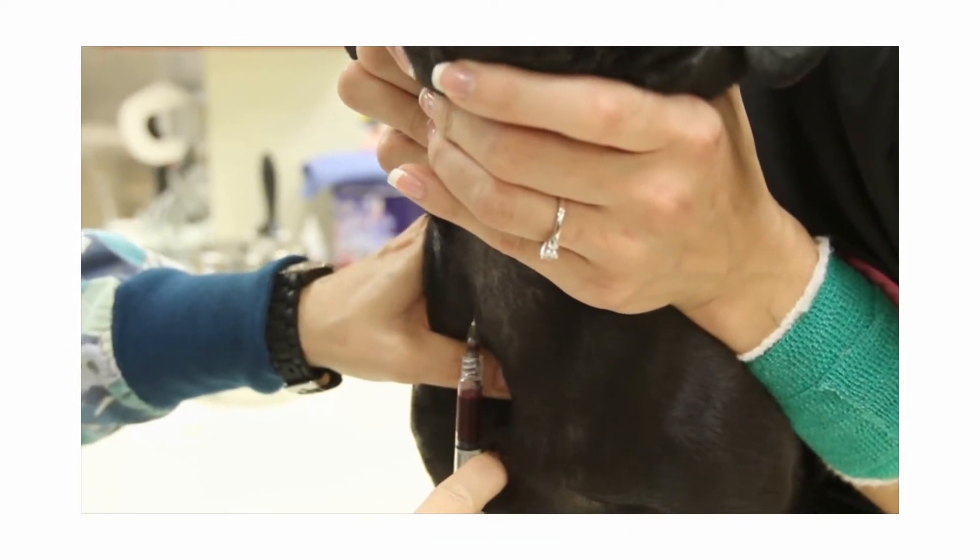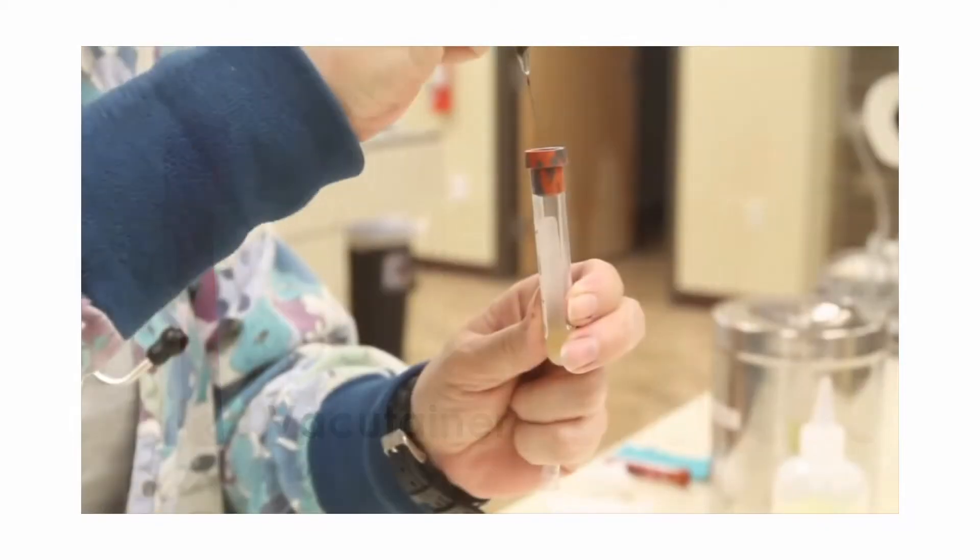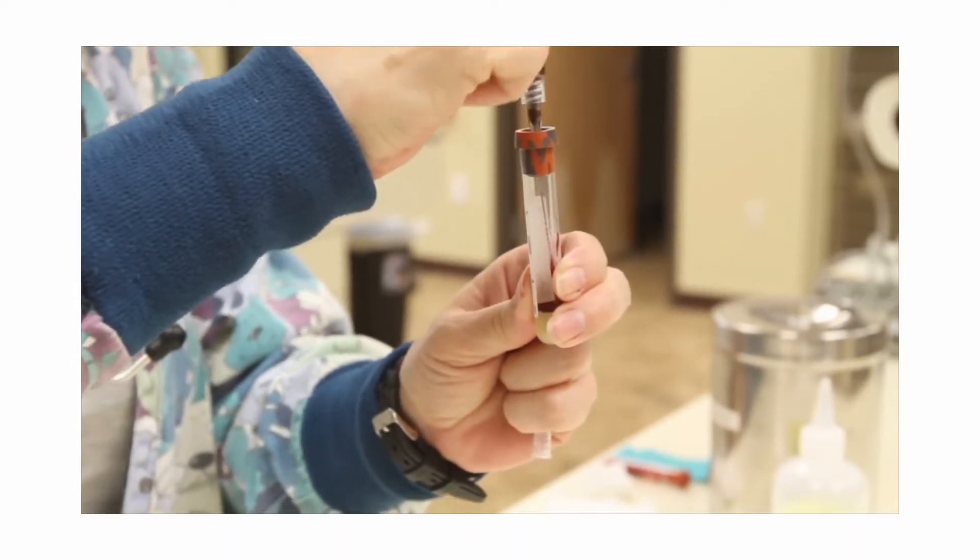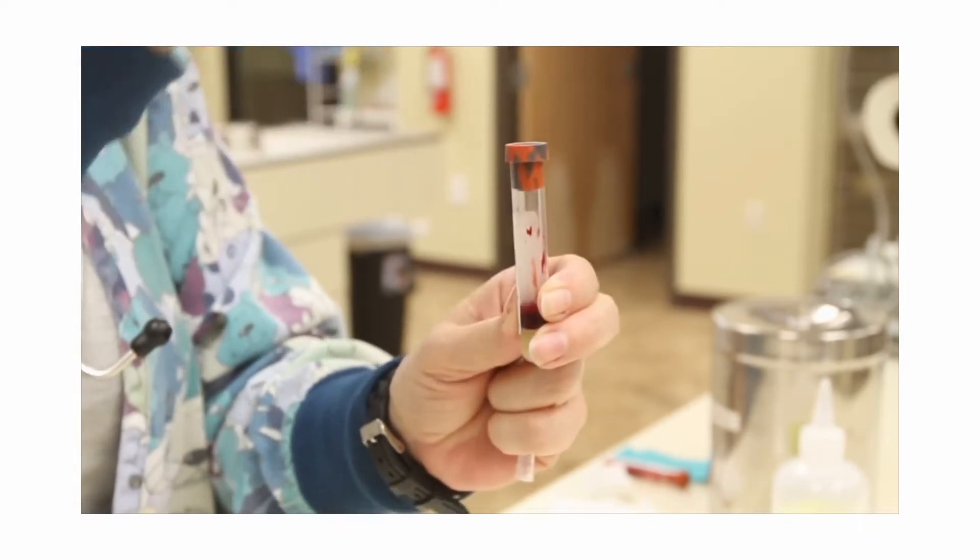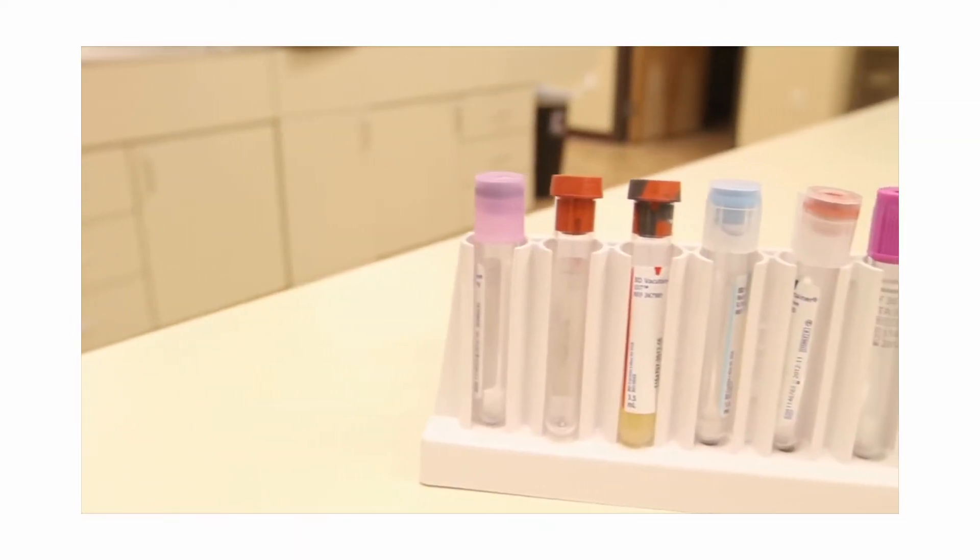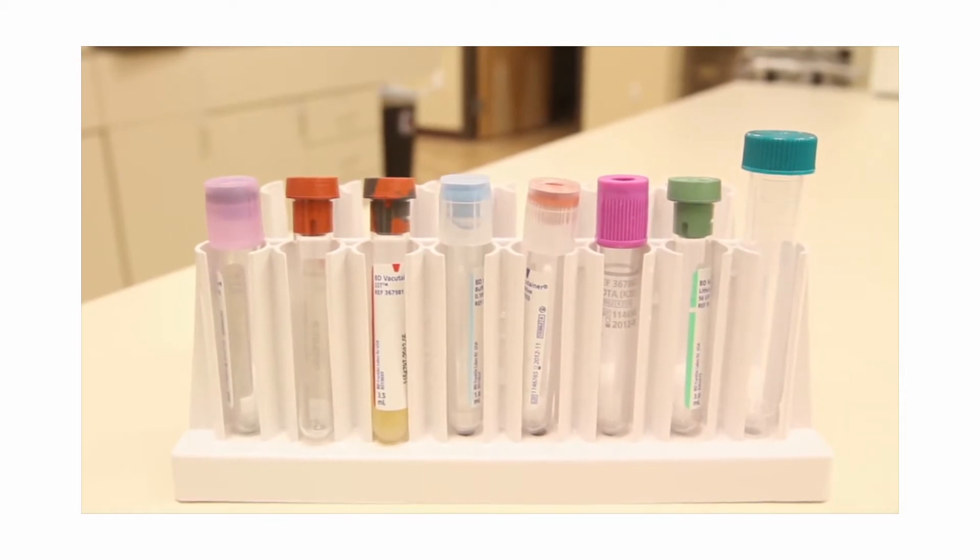This blood is collected into a sterile syringe and immediately deposited into one or more blood tubes called vacutainers. These vacutainers, as the name implies, contain a vacuum that sucks the blood into the tube once the syringe penetrates the stopper. The color of the rubber stopper provides a quick means of identifying if any added chemicals are present in the tube.